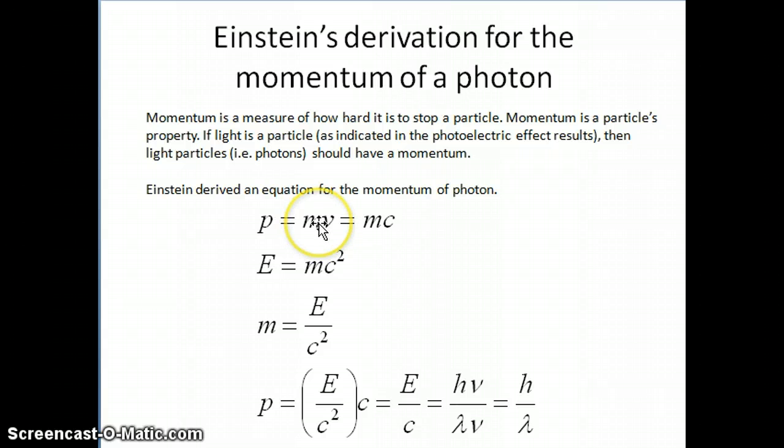Now, if light is a particle, which according to Einstein it is in the photoelectric effect case, then these light particles or photons should also have a momentum. So the question is how do we calculate the momentum, what kind of equation can we use to express the momentum of a photon, of a light particle.